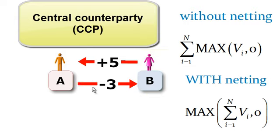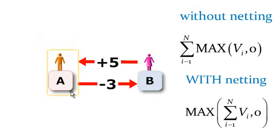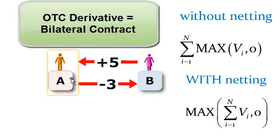Two derivative transactions between two counterparties, counterparty A and counterparty B, and they've entered into two separate derivative transactions. These could be swaps, credit default swaps, foreign exchange forward contracts for that matter. Each of the derivative transactions is a bilateral contract between the two counterparties.